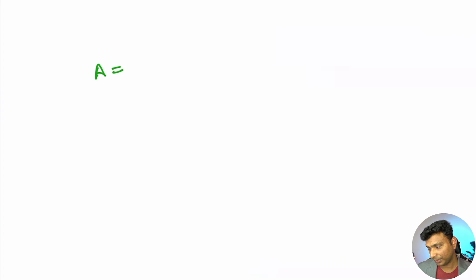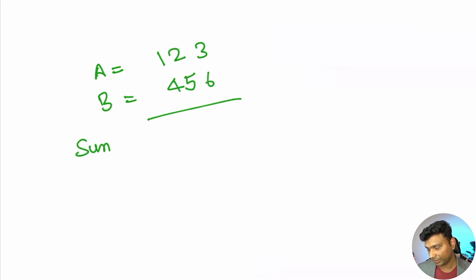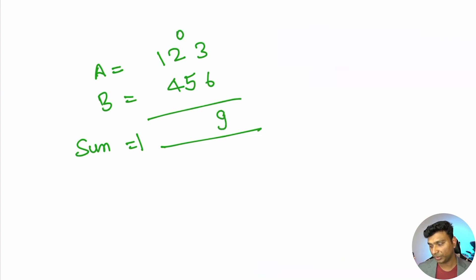Let's see how we do normal addition in decimal. If we have two numbers a as 123 and b as 456, we simply add 3 plus 6 as 9 with carry zero, then 2 plus 5 is 7 with carry zero.